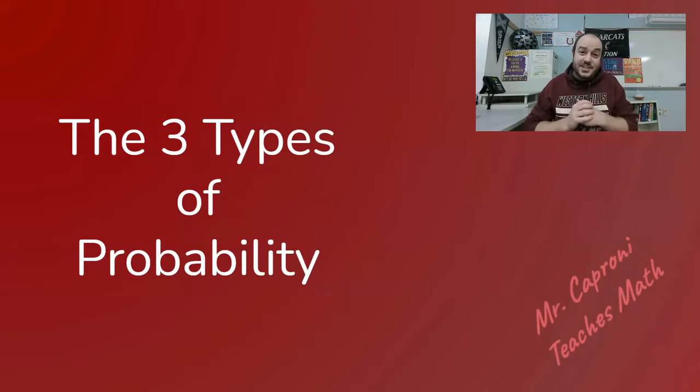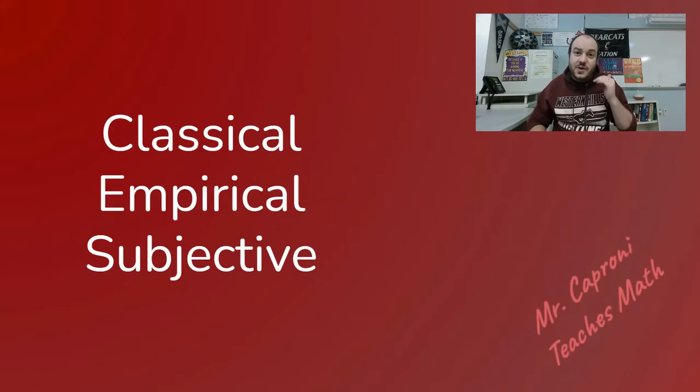Hey guys, welcome back. My name is Daniel Caproni and this is Probability and Statistics. Today we're going to be talking about the three types of probability and we're going to go through each one — how they're different — and look at some examples of how to tell which one is which. There are three types of probability: classical, empirical, and subjective.